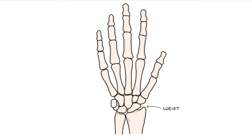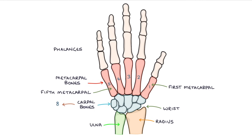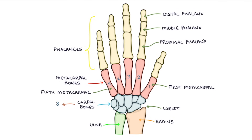Looking at the wrist, the radius and the ulna connect to the carpal bones, and there are eight of these carpal bones. The carpal bones connect to the metacarpal bones. The metacarpals are numbered 1 to 5 from the thumb to the little finger, meaning that the first metacarpal is at the base of the thumb and the fifth metacarpal is at the base of the little finger. The fingers and thumb contain the phalanges. Each finger has a proximal phalanx, a middle phalanx, and a distal phalanx. The thumb only has a proximal phalanx and a distal phalanx.